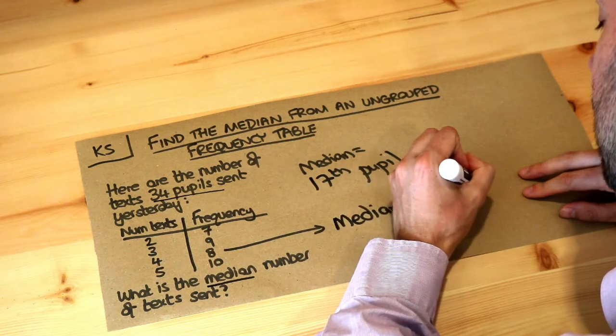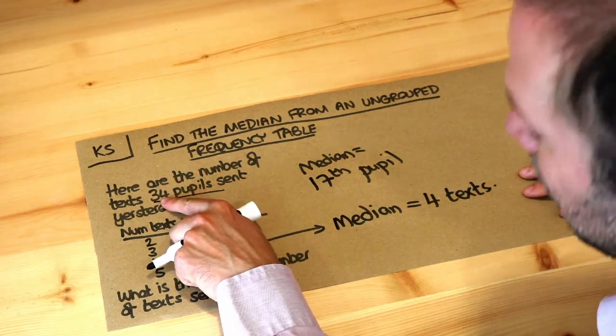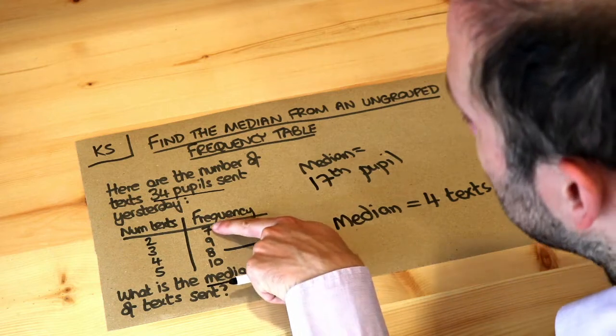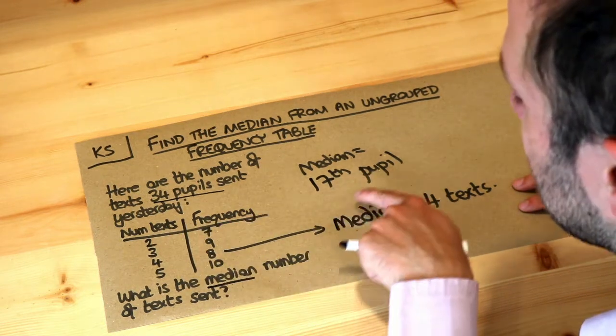So let me just repeat that again. We halve the number of pupils there are, the number of items there are. So we want the 17th people. And then we kind of basically work our way through the table until we get to the 17th thing.